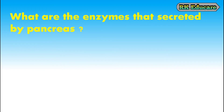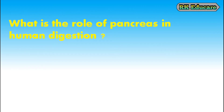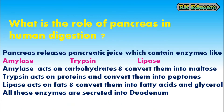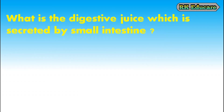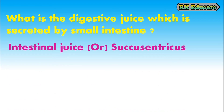What are the enzymes secreted by the pancreas? Pancreas secretes enzymes like amylase, trypsin and lipase. Amylase acts on carbohydrates and converts them to maltose. Trypsin acts on proteins and converts them to peptones. Lipase acts on fats and converts them to fatty acids and glycerol. All these enzymes are secreted into the duodenum. What is the digestive juice secreted by the small intestine? Intestinal juice or succus entericus is the digestive juice secreted by the small intestine.